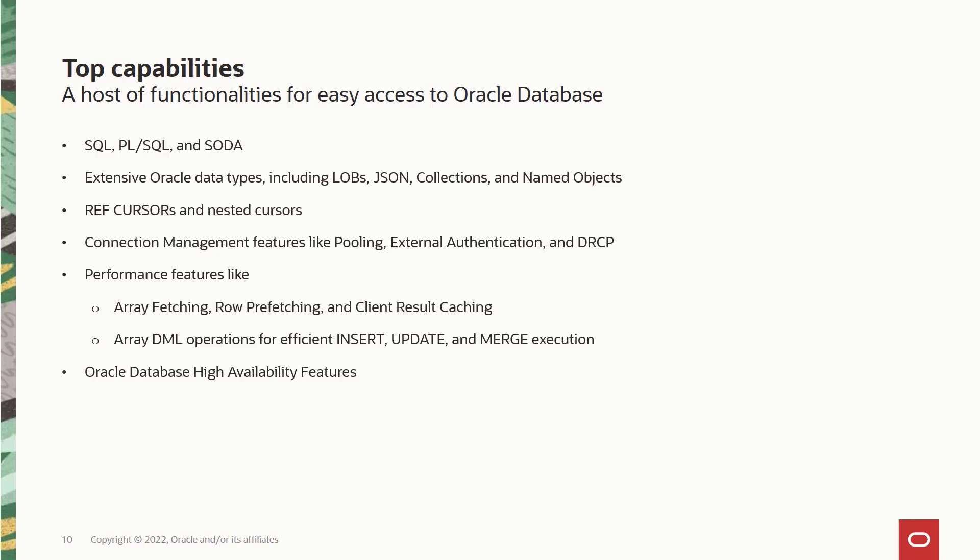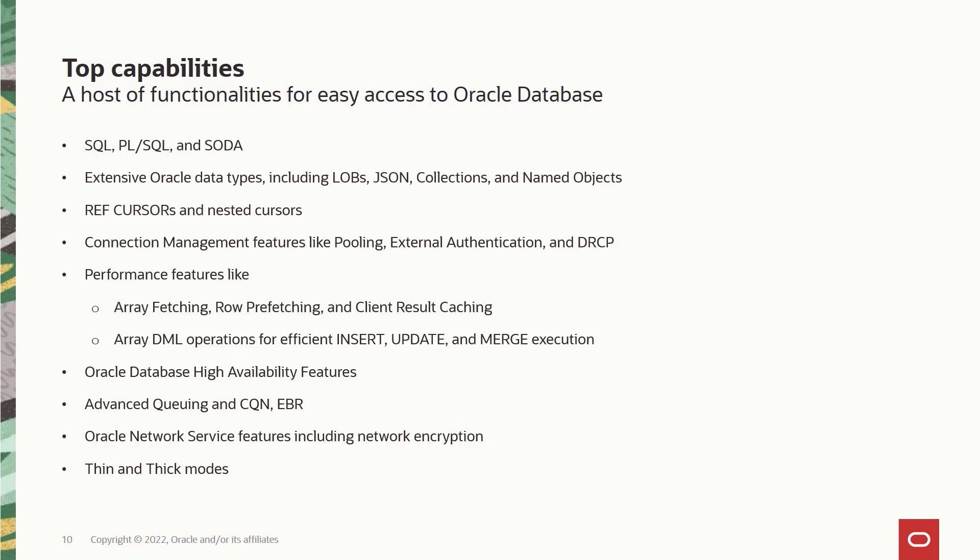Oracle database high availability features are also supported in Python Oracle DB, such as FAN notifications, application continuity and transaction guard support. Next, messaging capabilities such as advanced queuing and continuous query notifications are supported, and also you have support for edition based redefinition or EBR to enable uninterrupted availability of Oracle based applications during patching or upgrades. Python Oracle DB allows you to make full use of the Oracle network service infrastructure including encrypted network traffic and security features. Last but not least, you have thin and thick modes for efficient use of every available feature in the Oracle database.